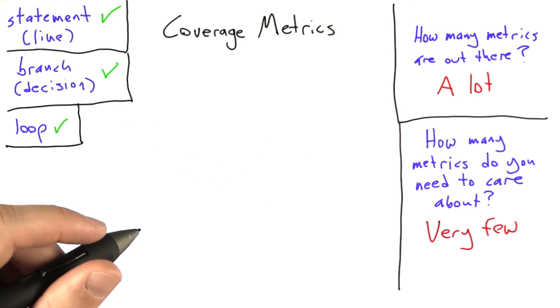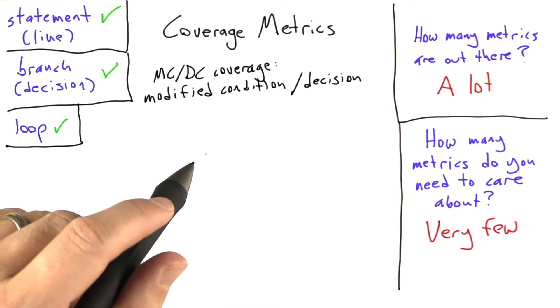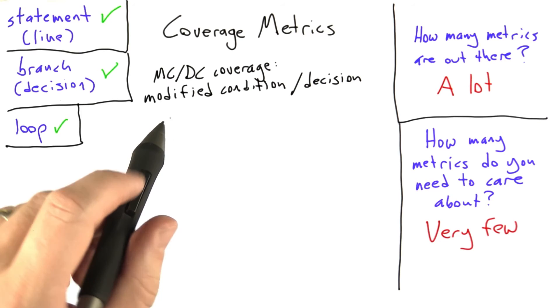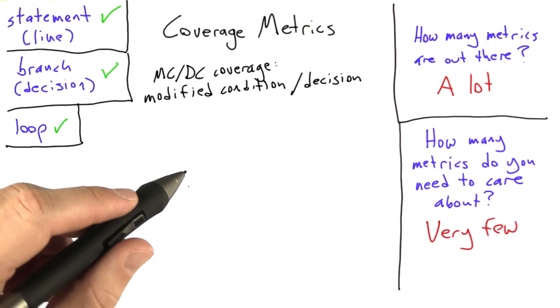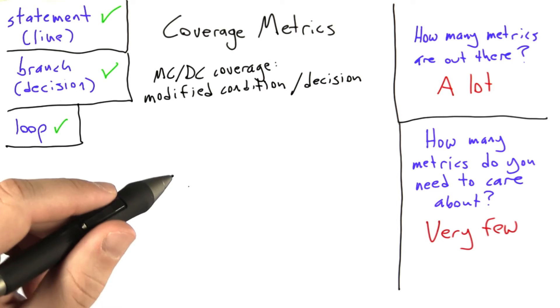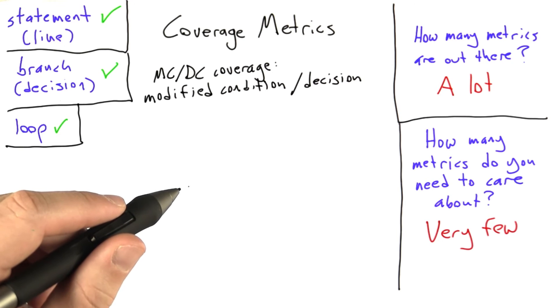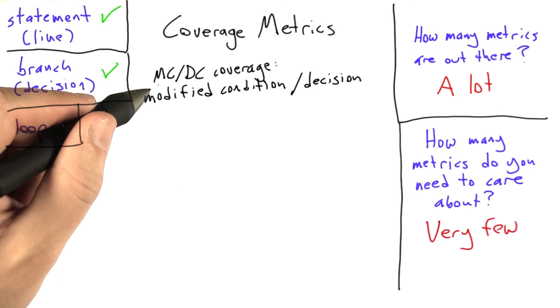Now let's look at a fairly heavyweight coverage metric called Modified Condition Decision Coverage, or MCDC. If that seems like kind of a big mouthful, there's a reason for that: MCDC coverage is required for certain kinds of avionics software. If you're going to write safety-critical software where if the software fails, airplanes can fall out of the sky, then one of the things you'll need to do to show your software is correct is get a high degree of MCDC coverage.